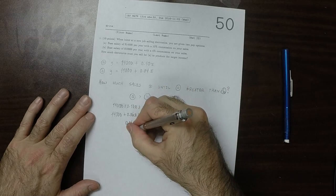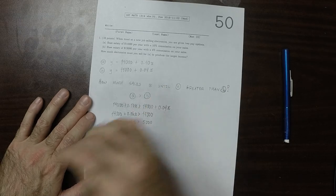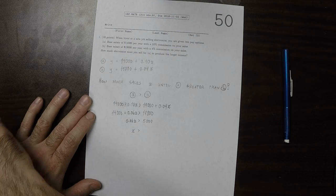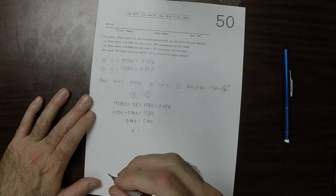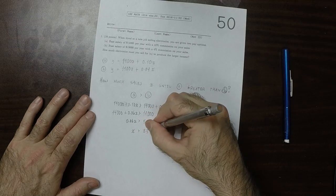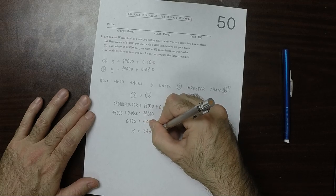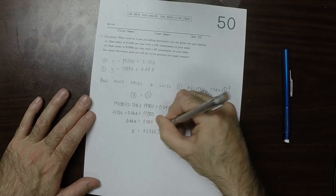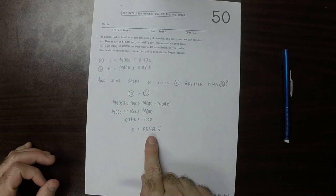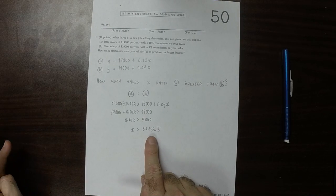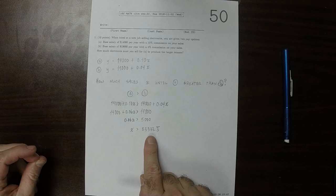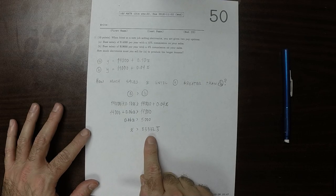And then divide both sides by 0.06. So x equals 83,333.33. That is to say that in order for option a to be better for you, you need to have sales of $83,333.